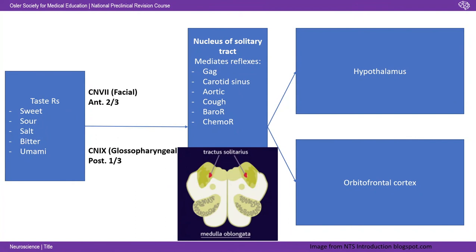Then we've got taste. There are five modalities: sweet, sour, salt, bitter, and umami — the protein taste. This is a bit funky because we've got two cranial nerves involved. Cranial nerve seven, the facial nerve, covers the anterior two thirds of the tongue. Cranial nerve nine, the glossopharyngeal, covers the posterior one third. A simple way to remember: the anterior two thirds is closest to the face, and the glossopharyngeal is closest to the pharynx. These project to the nucleus of the solitary tract, which mediates a large number of reflexes — such as the gag reflex and cough reflex.